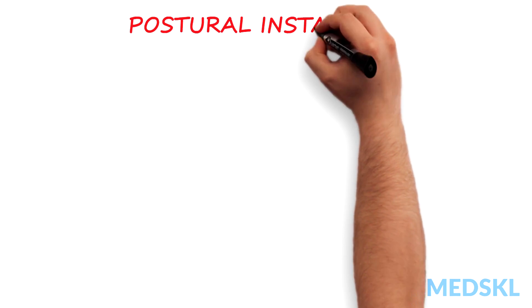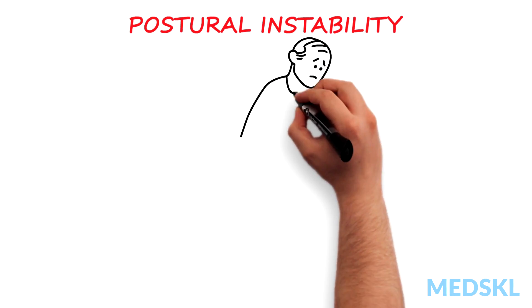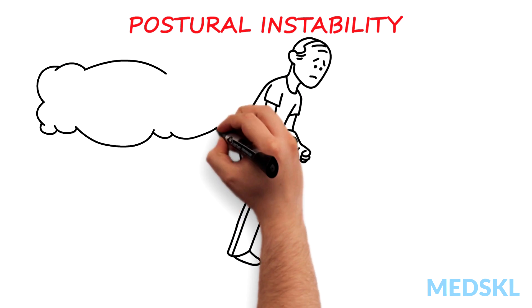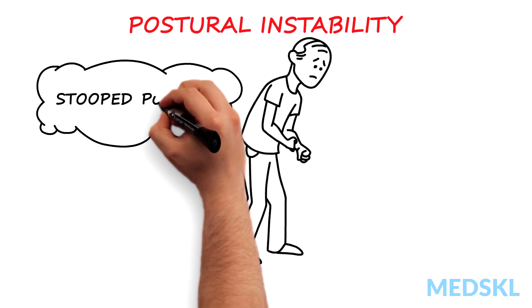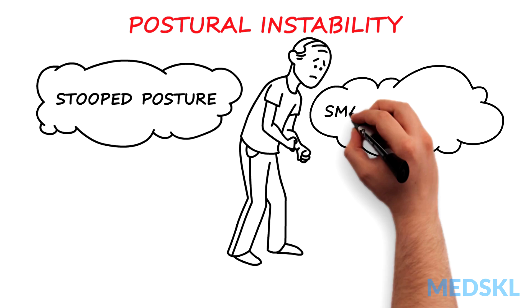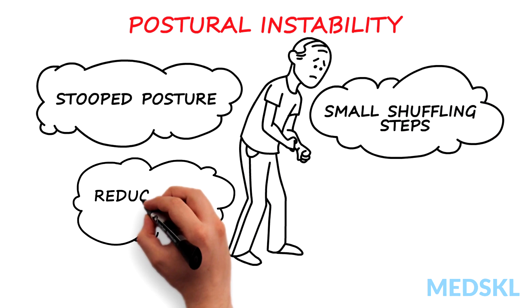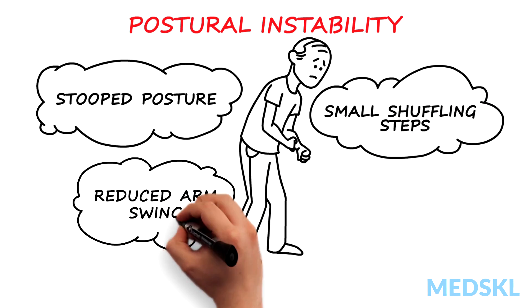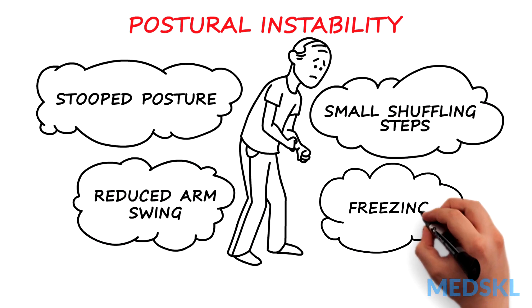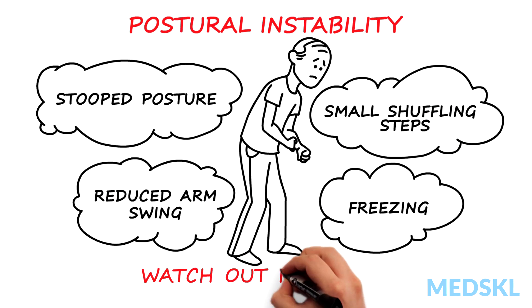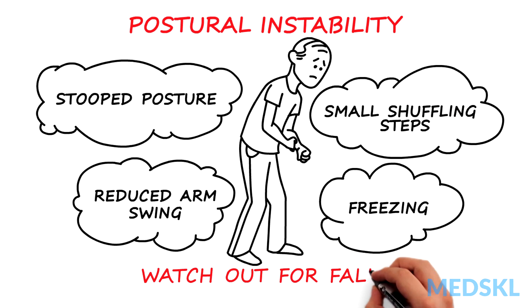Parkinsonism also causes characteristic gait abnormalities, like stooped posture, small shuffling steps, reduced arm swing, and freezing. So make sure to ask your patients and watch out for falls.